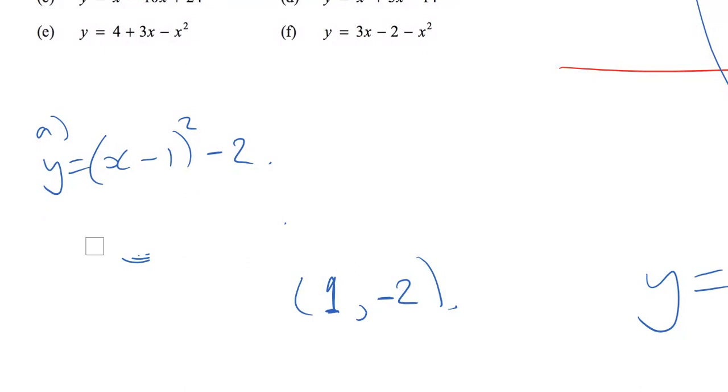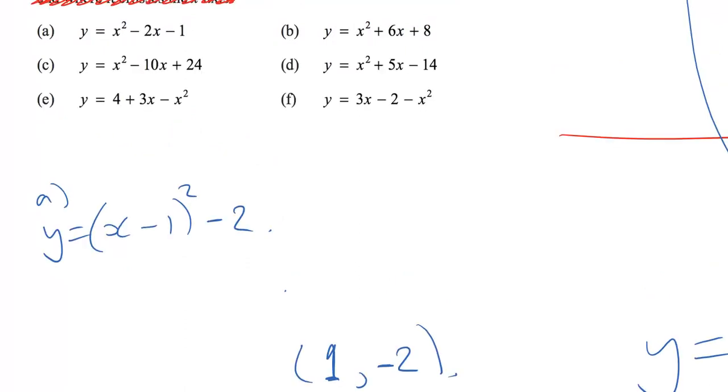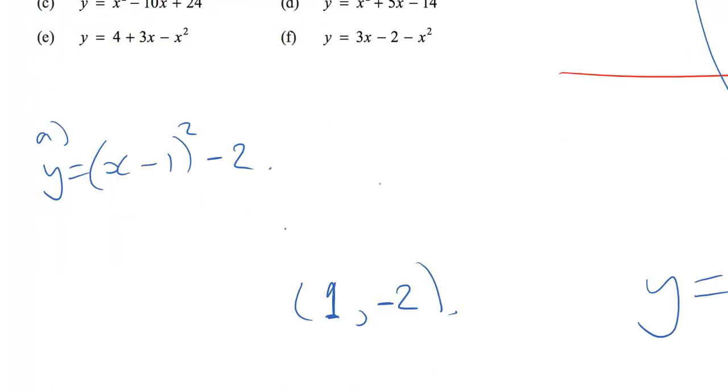Now, how do I know it's a minimum, not a maximum? Well, because I know I'm dealing with a smiley face because I have that number in front of x squared just being a positive 1, which is greater than 0. So there we go. We can draw it. This point here is 1 minus 2. Now, how do I find the line of symmetry? There is this, a parabola is a symmetrical shape. It has a line of symmetry right through the middle there. Well, of course, if that has an x-coordinate of 1, then that line of symmetry must be x equals 1. That's it. We're finished.